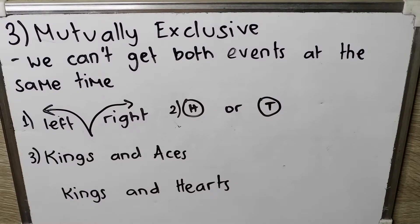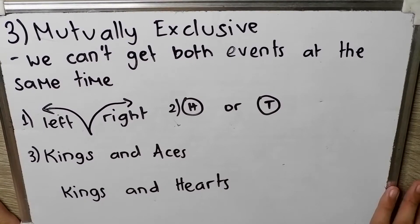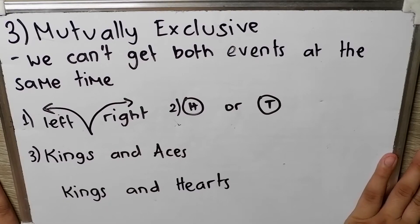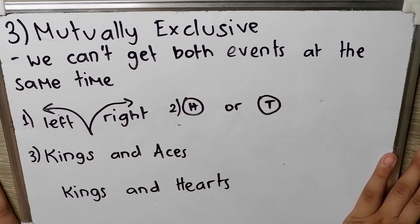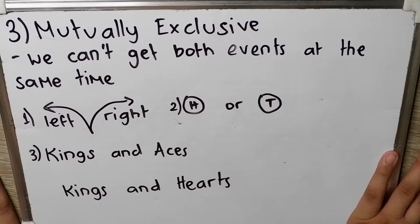This is the third type of event, and it is called mutually exclusive events. This is an event where we can't get both events at the same time. For example, left or right, because you cannot go left and right at the same time. You can also have heads or tails — you can't have heads and tails at the same time. And kings and aces, because there's no king of aces.